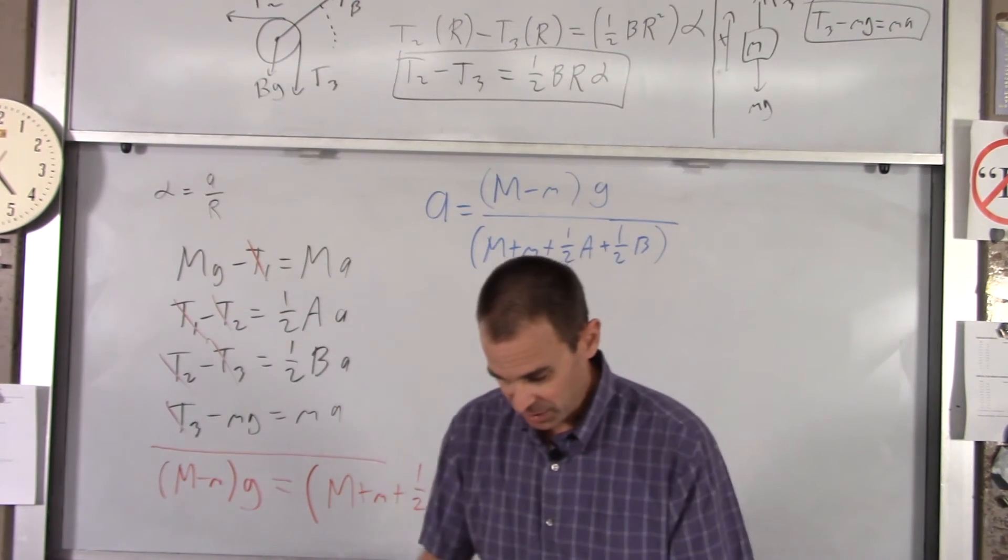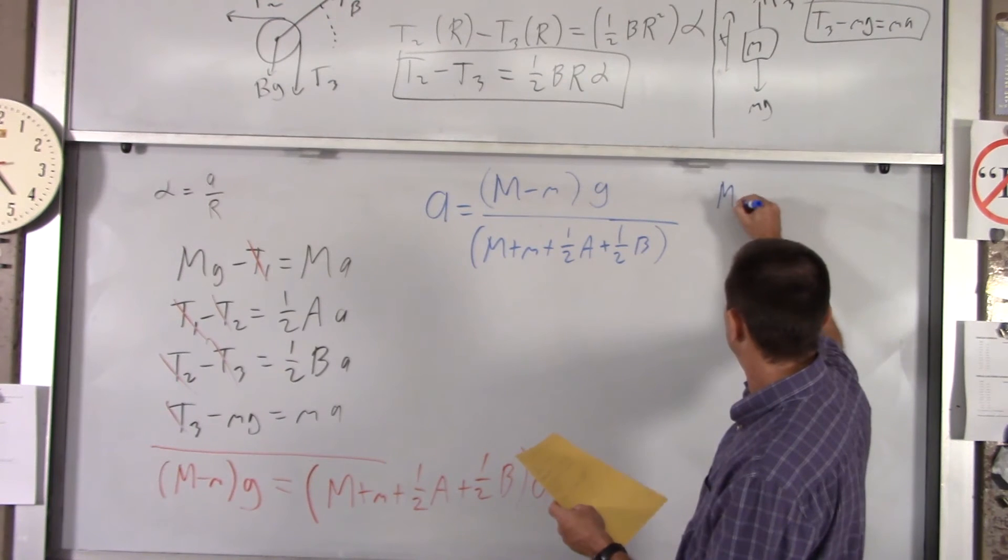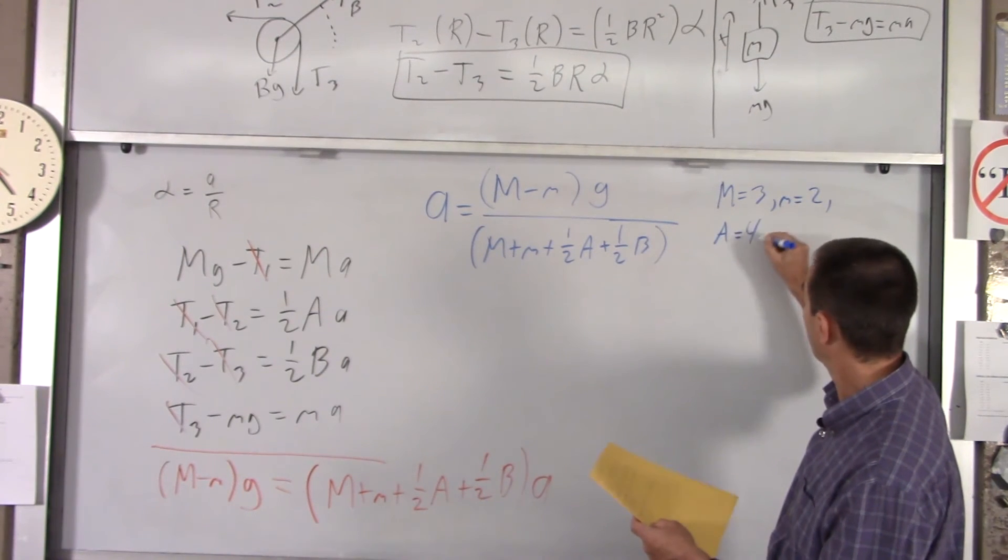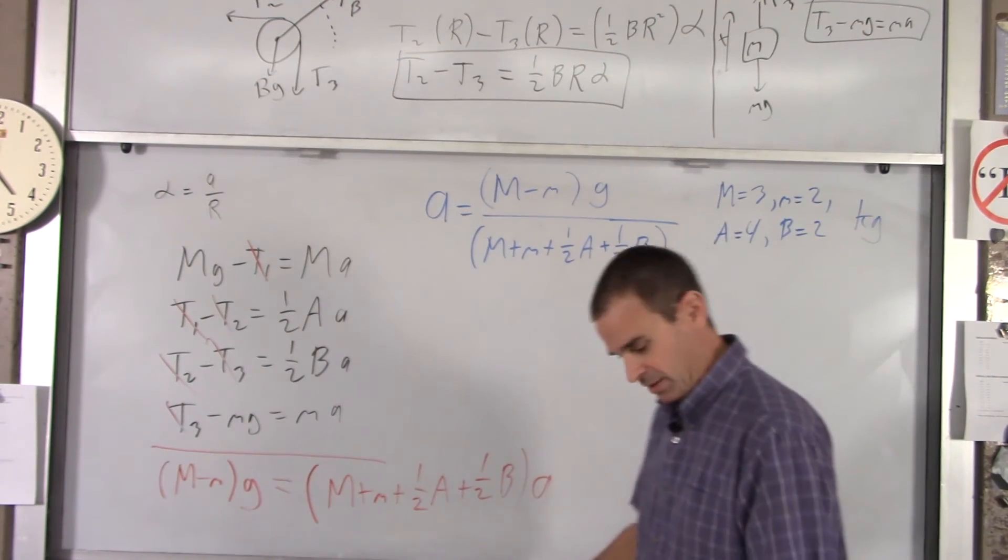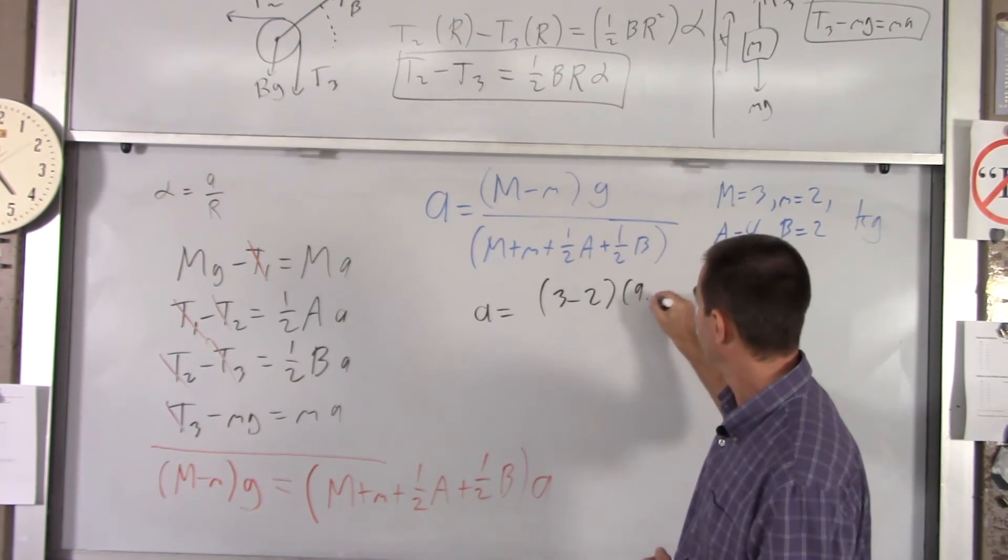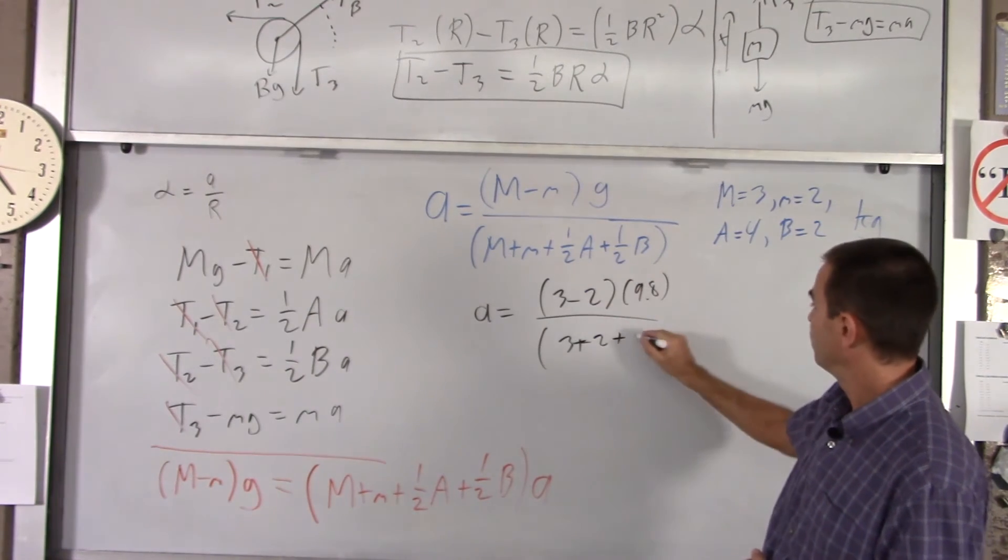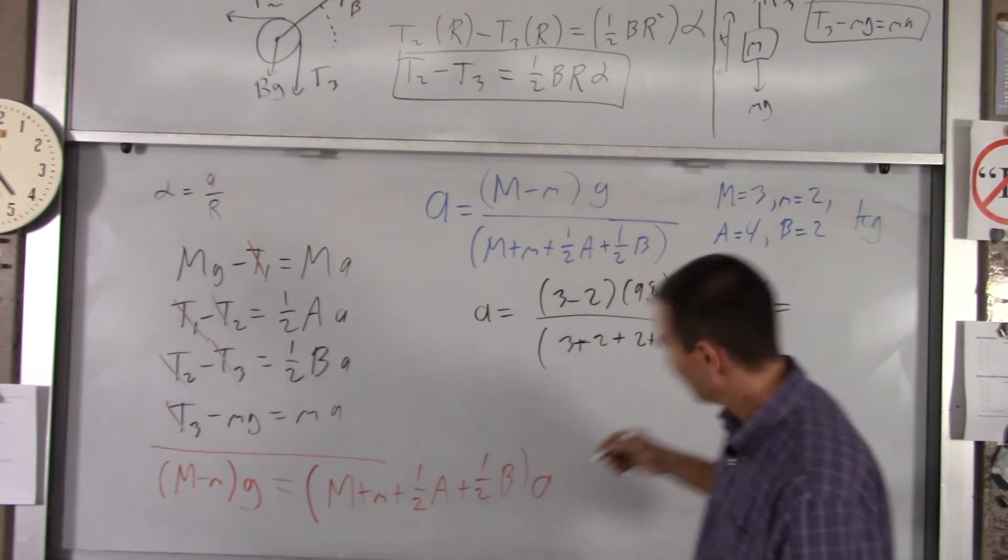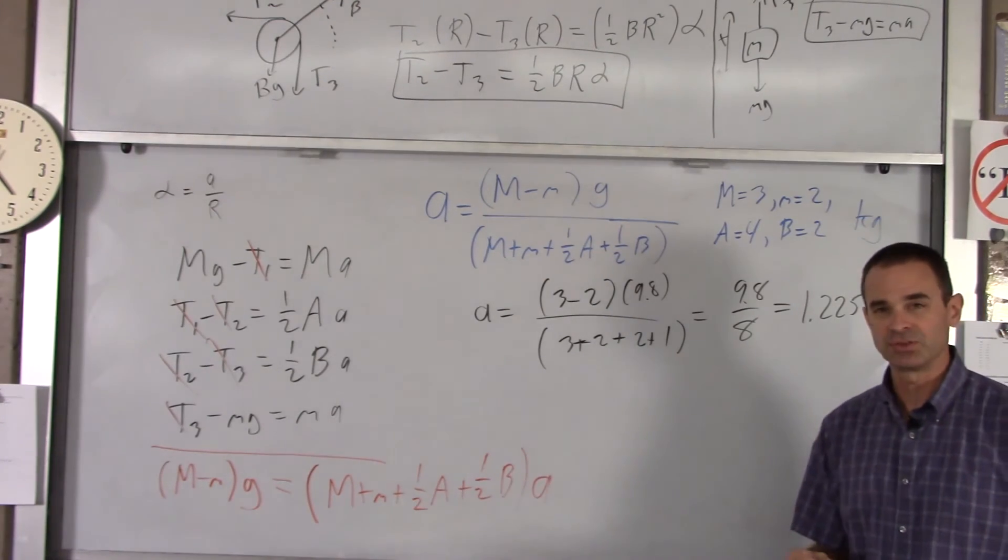Now, let's throw some numbers at this. I want to compare tensions really quick. So I picked some easy numbers for us to do. Let's say big M is 3 kg, little m is 2, pulley A is 4, and pulley B is 2. So let's first find our acceleration. A would be 3 minus 2 times 9.8 over 3 plus 2 plus half of A, which would be 2, plus half of B, which would be 1. You get 9.8 over 8, which equals 1.225 meters per second per second. That's the acceleration of our system.